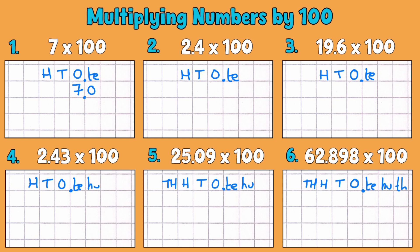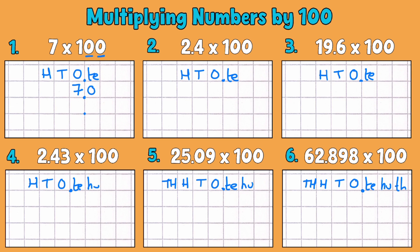So I'm going to put a decimal place nice and in line below it and you'll notice the hundred has two zeros and that's indicative of how many times you need to move your numbers over to the left.